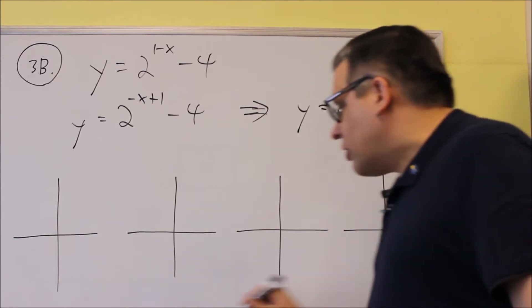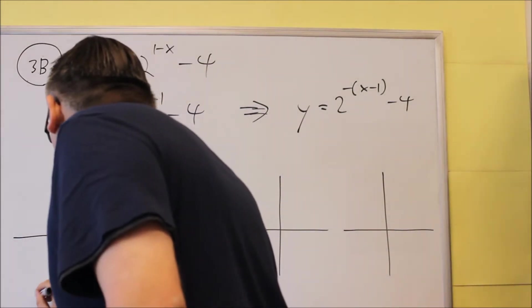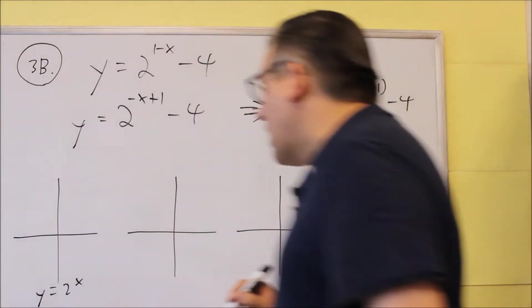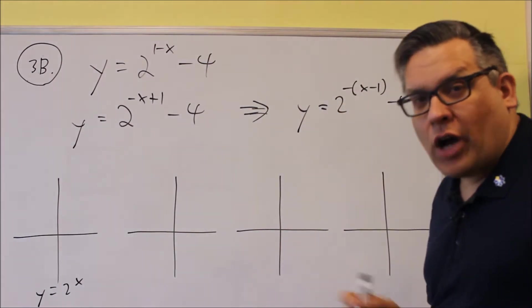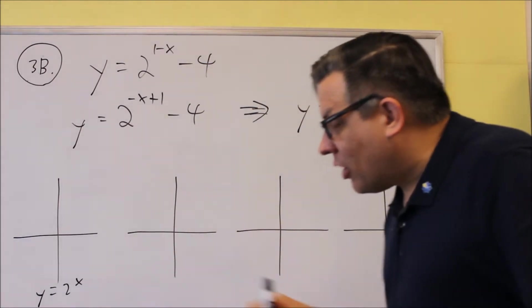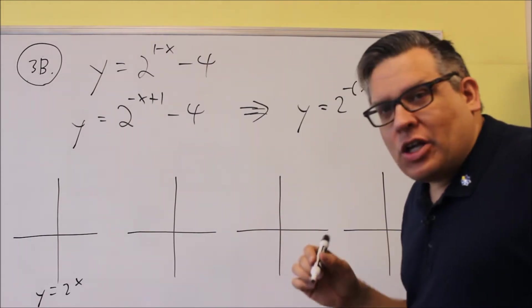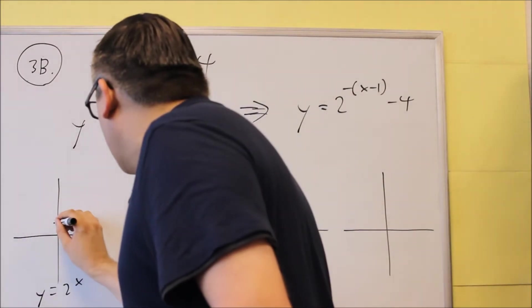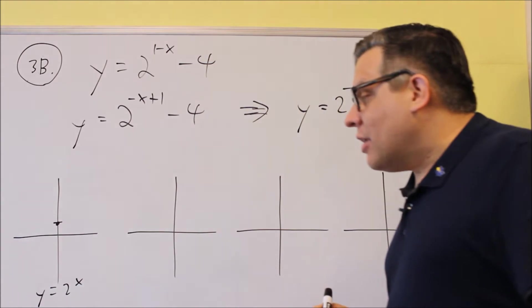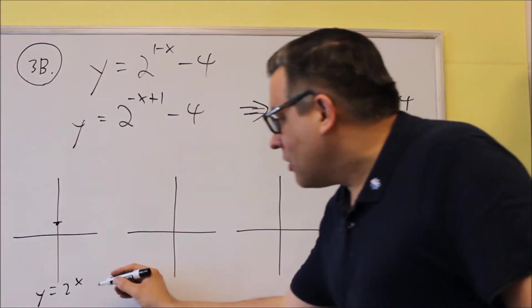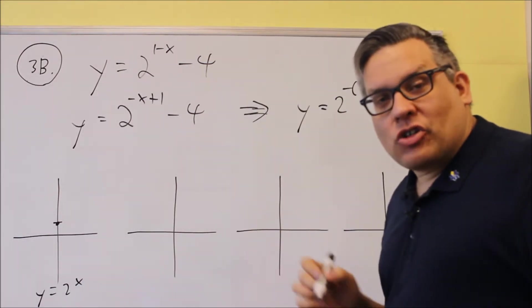So with this one, they said you want to start with the base graph of y equals 2 to the x. So that's going to be the first one that I'm going to graph. So with this one, I'm going to, again, start with my key points. I know that it's going to have to go through across the y-axis at 1. If I put a 0 in there, anything to the 0 power is 1.